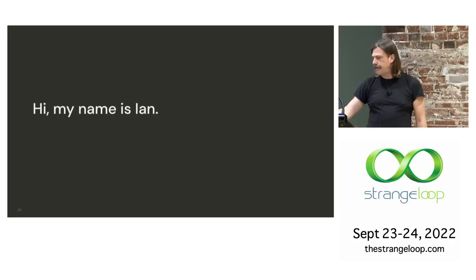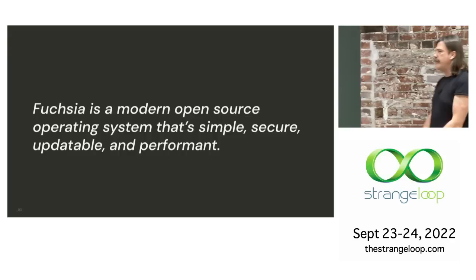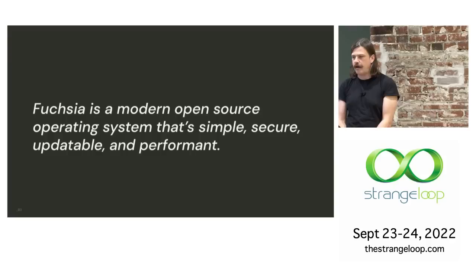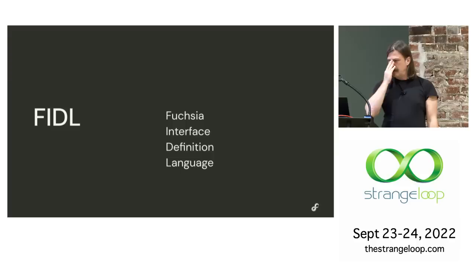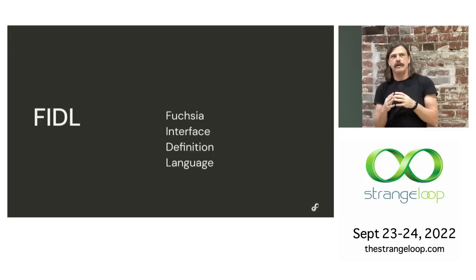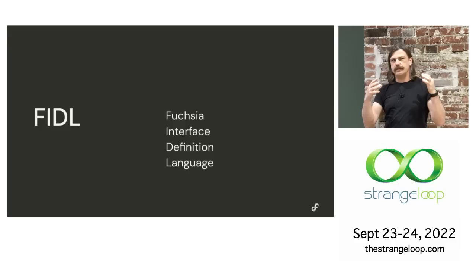So what is Fuchsia? Here's what it says on our website, fuchsia.dev: Fuchsia is a modern open source operating system that's simple, secure, updatable, and performant. That's all true, but Fuchsia is not the only operating system that has these goals. A big part of how we reach these goals is through the way we describe the boundaries between the different parts of our system. What I've worked on for most of my time on Fuchsia is a system called FIDL, the Fuchsia Interface Definition Language.